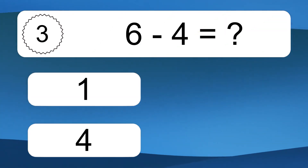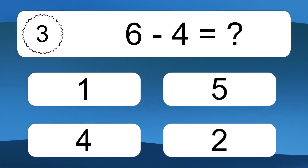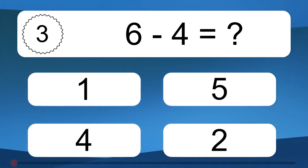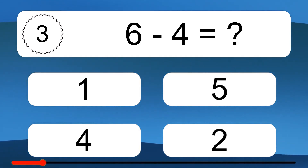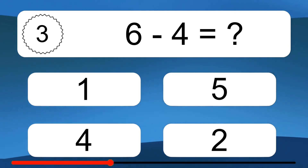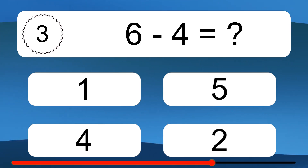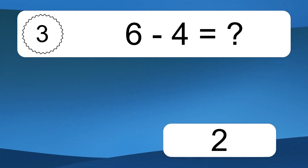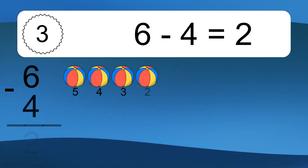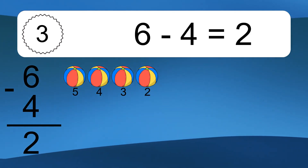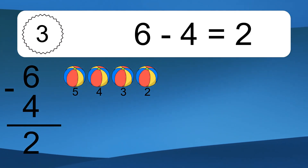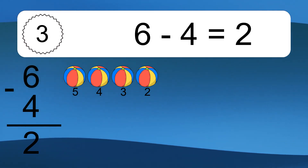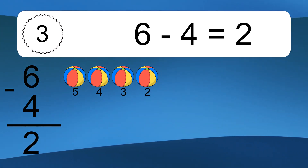6 minus 4 equals what? 6 minus 4 equals 2. Let's count it: 5, 4, 3, 2.